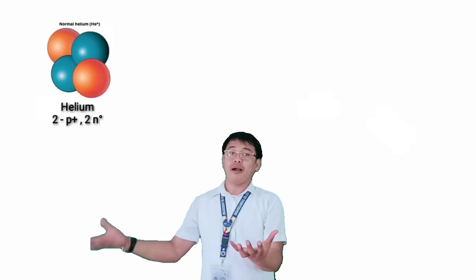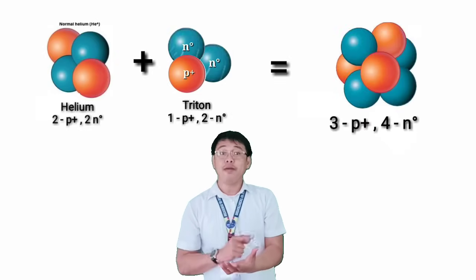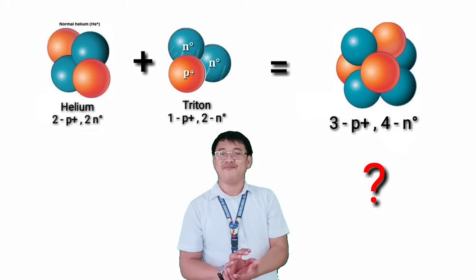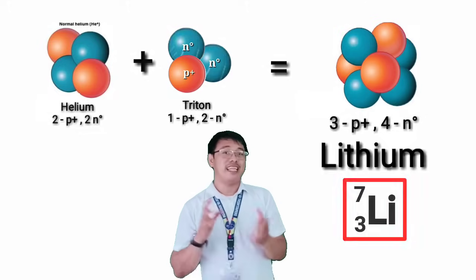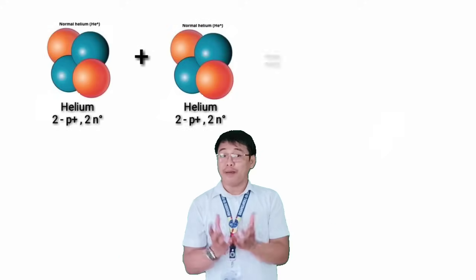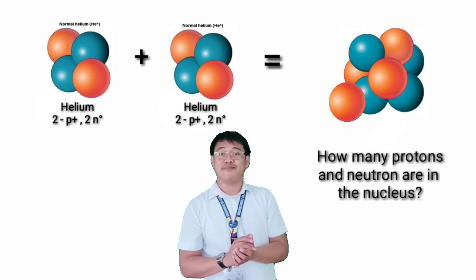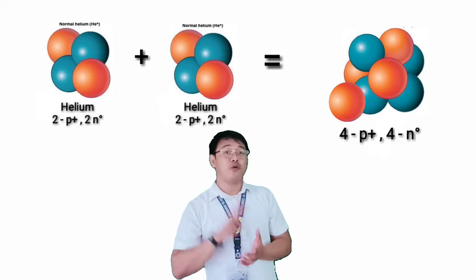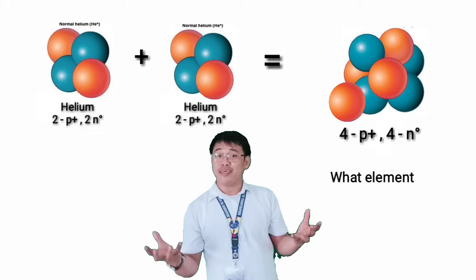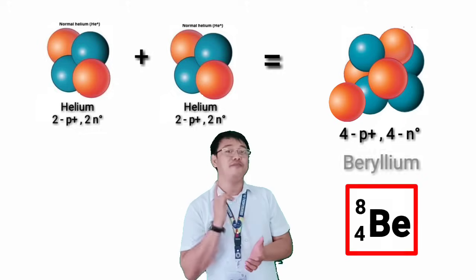When a helium ion is bombarded with a triton, the nucleon now has three protons and four neutrons. What do you think is the element formed? Correct, lithium. How about when two helium ions combine? How many protons and neutrons are in the nucleus? Yes, there are four protons and four neutrons. What about the element? What element is formed? Correct, we have beryllium.